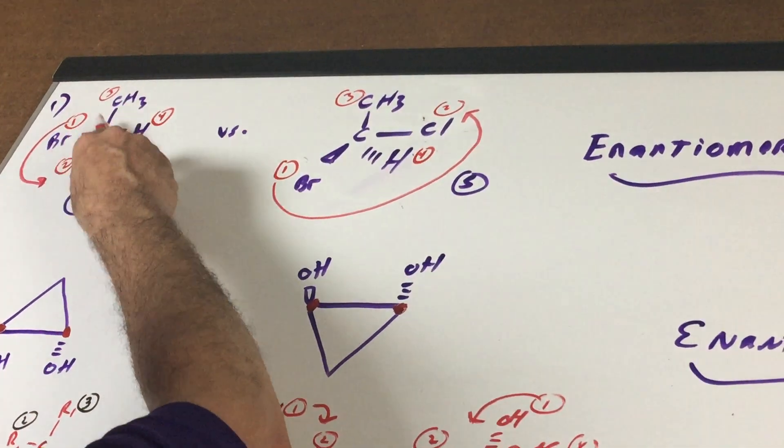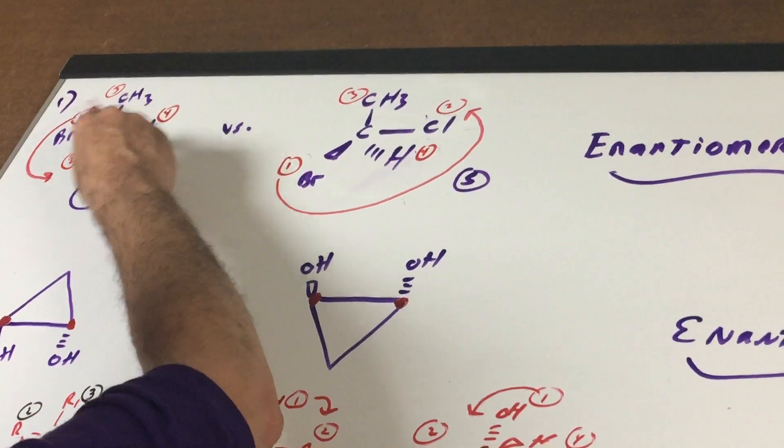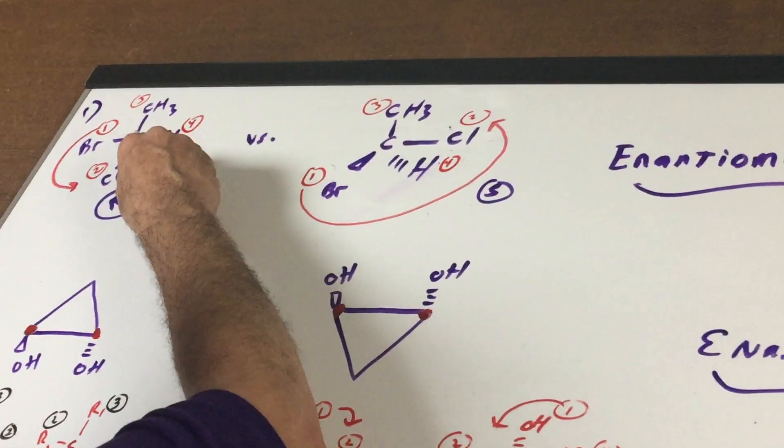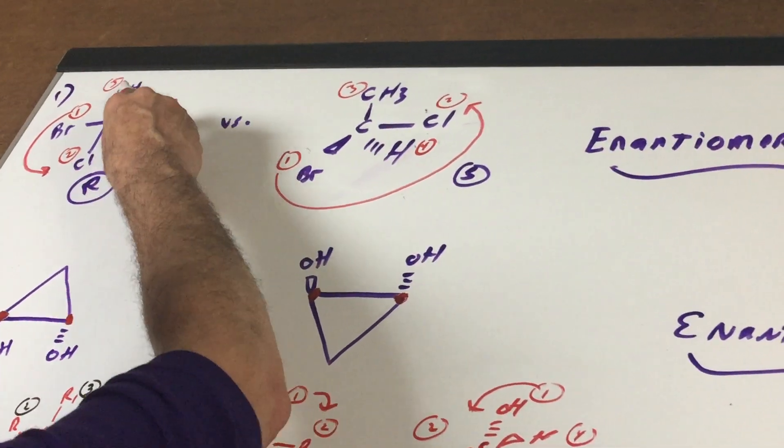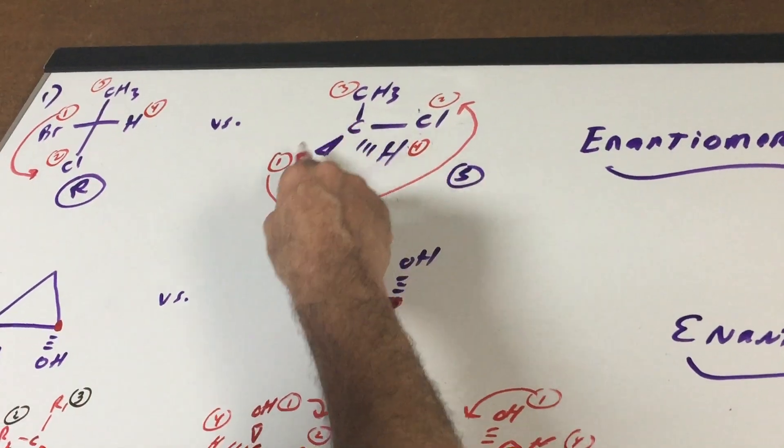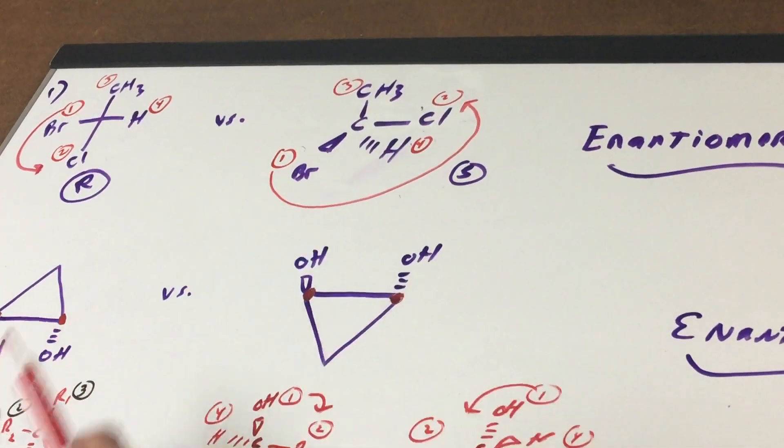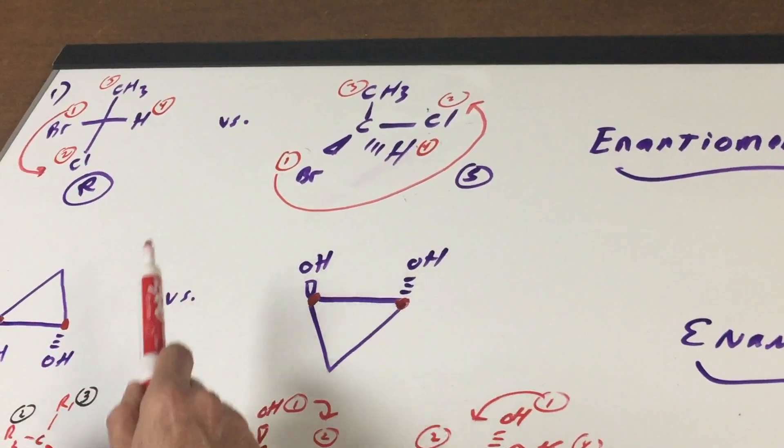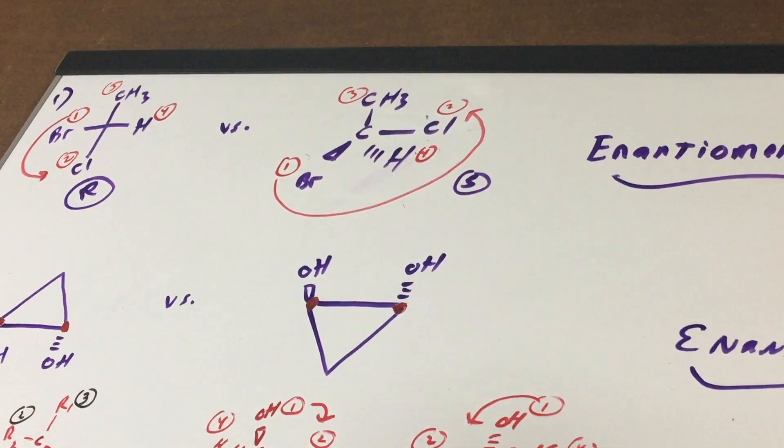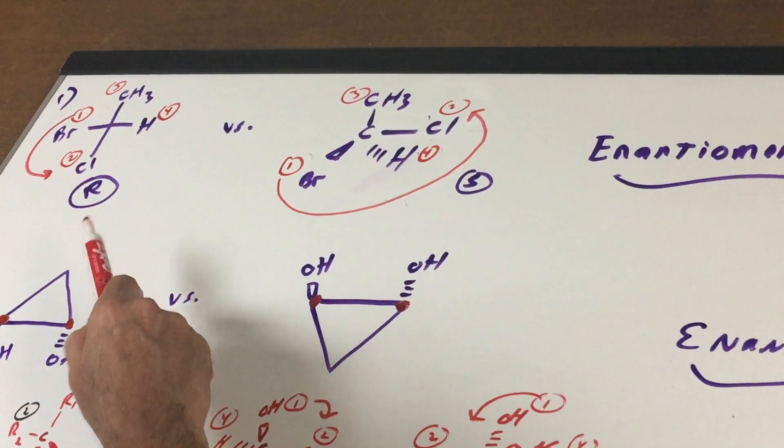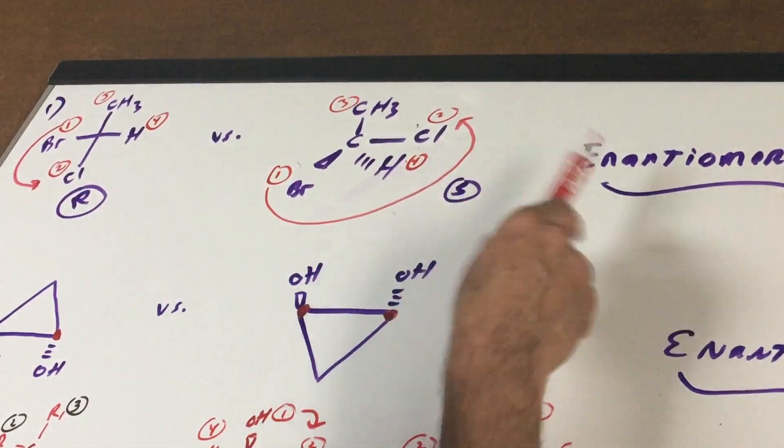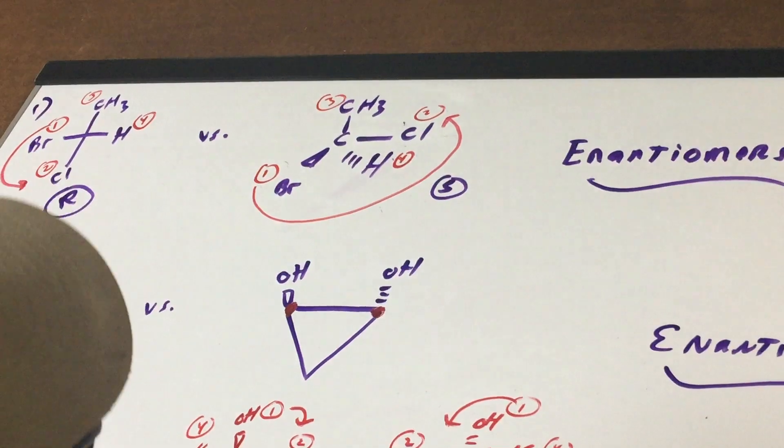So that means that the configuration is an S. And as you can see, this carbon has all the same groups. So this carbon has a bromine-chlorine-methyl H. This carbon has a bromine-chlorine-methyl H. So if one's an R and the other is an S, and the connections are all the same, that you haven't moved any atom position, makes it a stereoisomer. And if one's an R and one's an S, these are enantiomers.